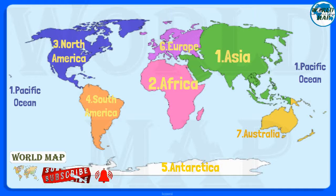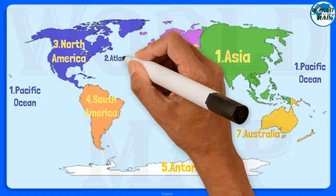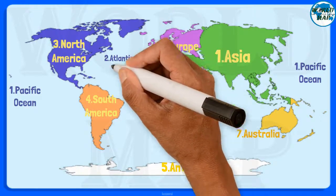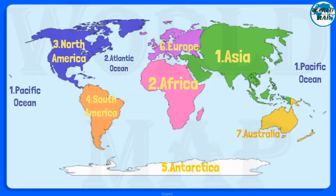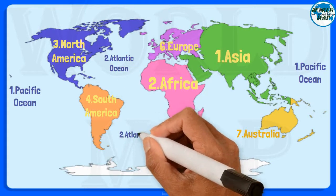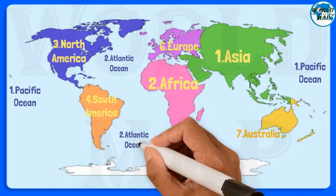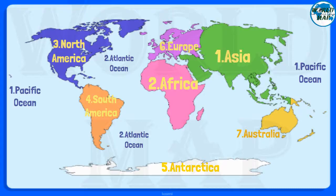Number 2: Atlantic Ocean. The Atlantic Ocean is situated between the Americas and the European and African continents. The Atlantic Ocean is the second largest and saltiest ocean in the world.